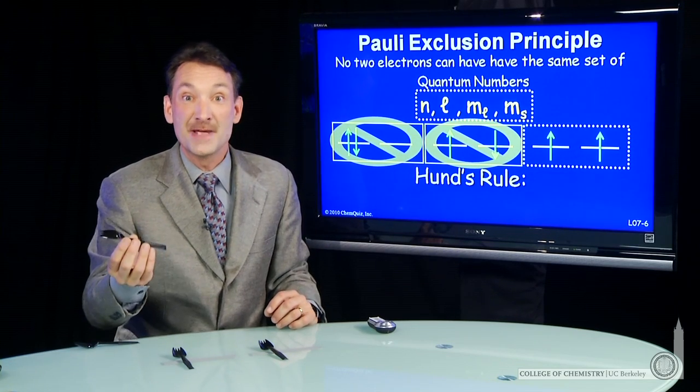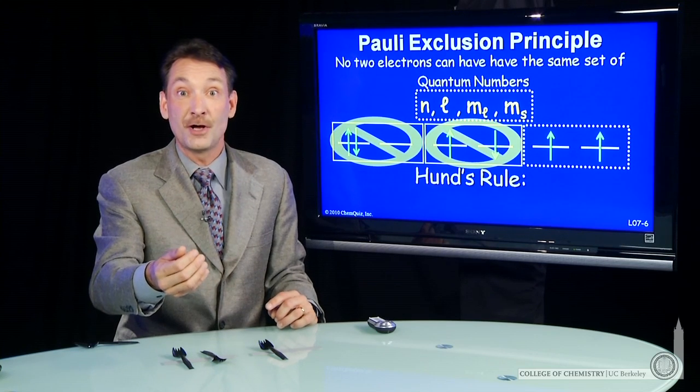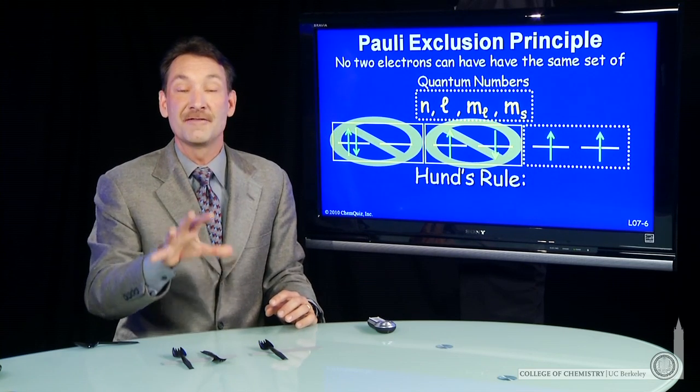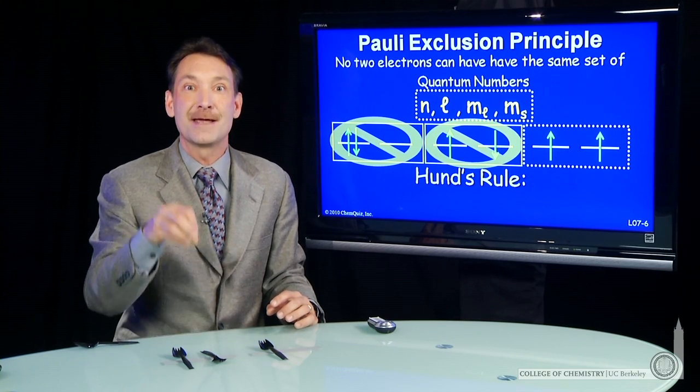Electrons are fermions. They're spin 1 half. And fermions follow this Pauli exclusion principle, where no two can have exactly the same quantum numbers. They can't occupy the same space at the same time.